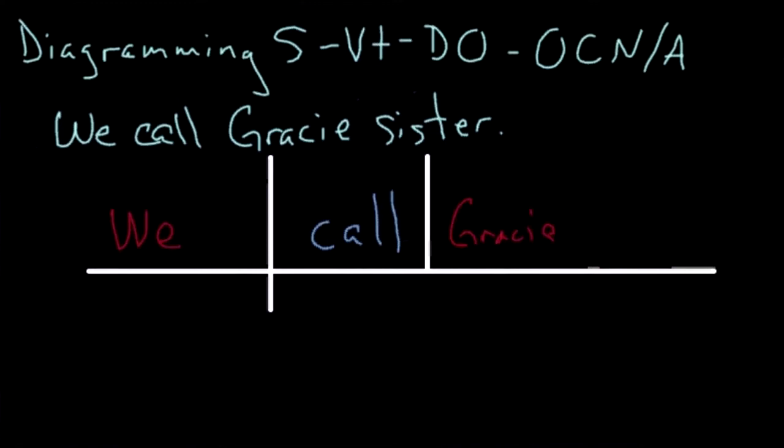Because of the connection that the sentence makes between the words, we diagram this pattern almost exactly like the predicate nominative and predicate adjective.